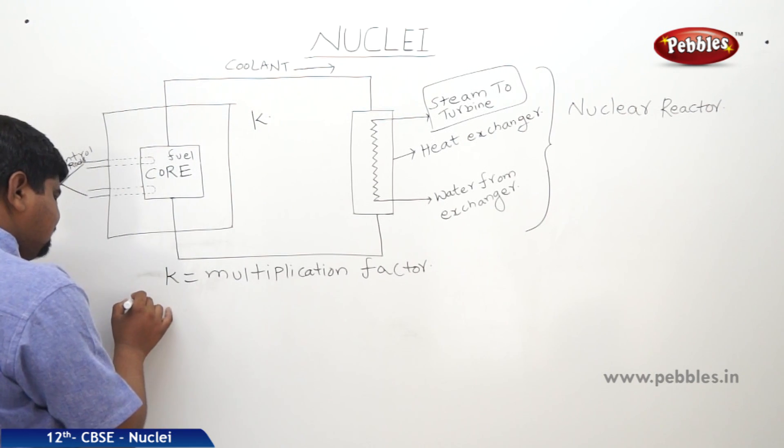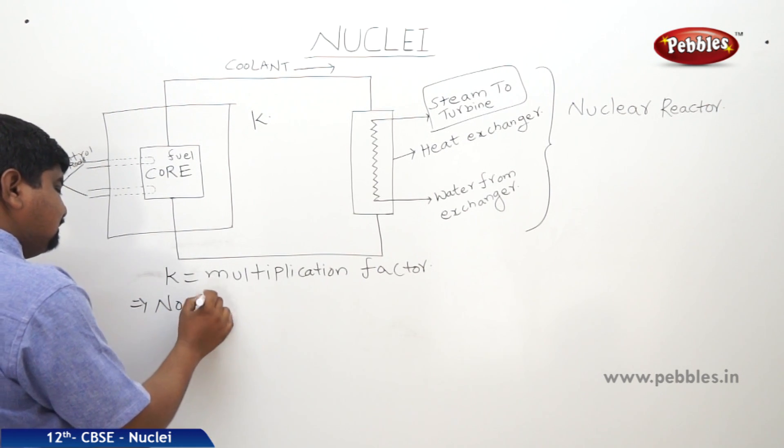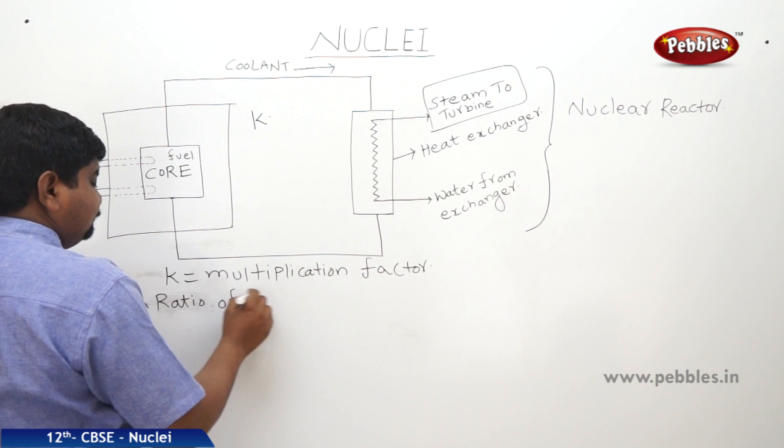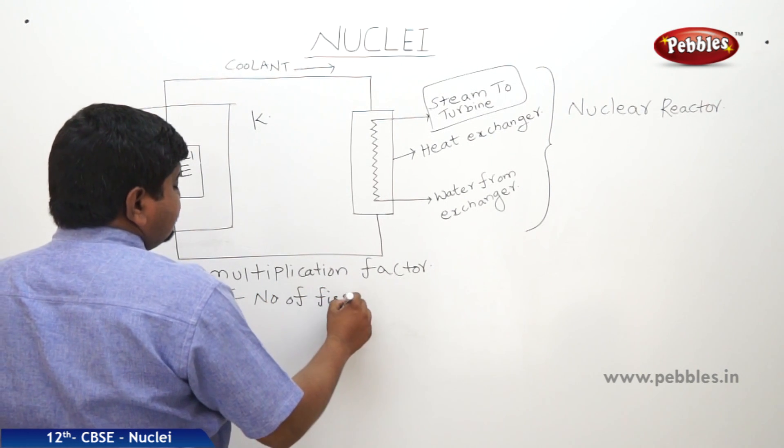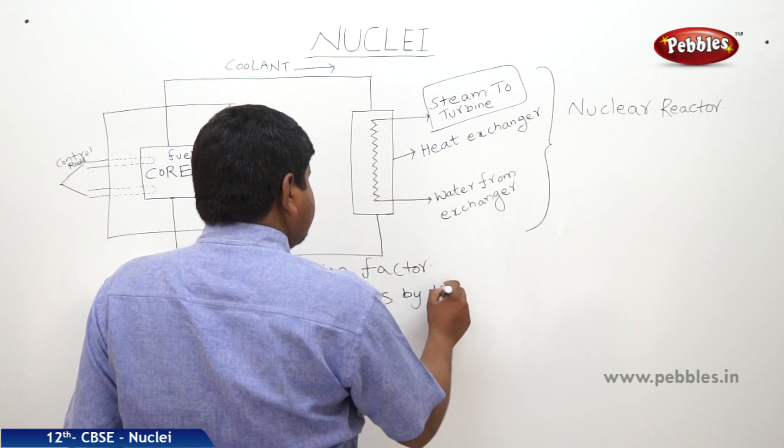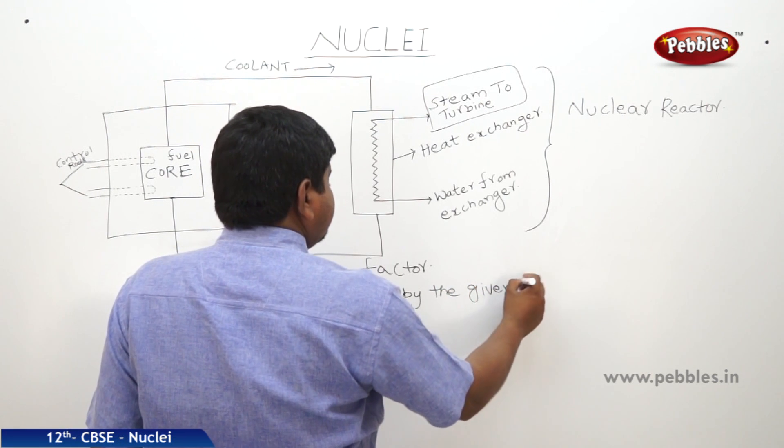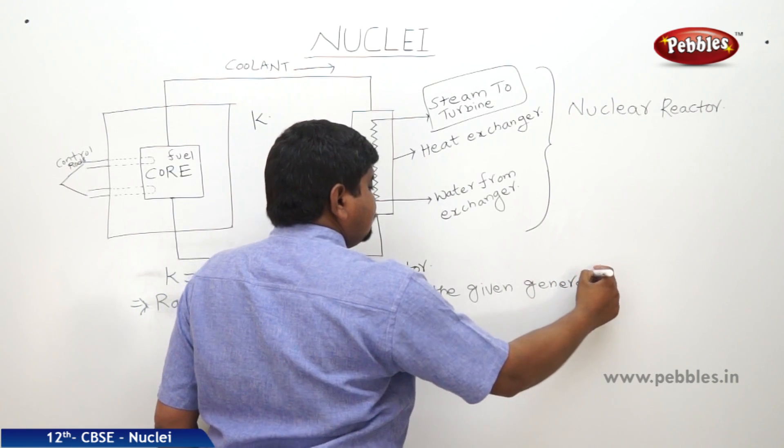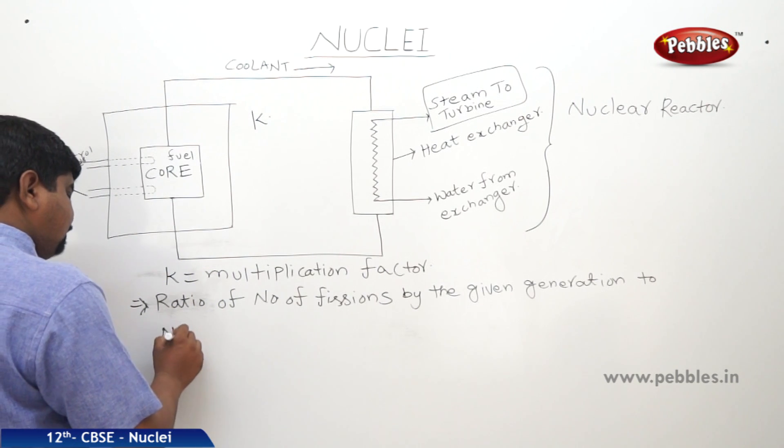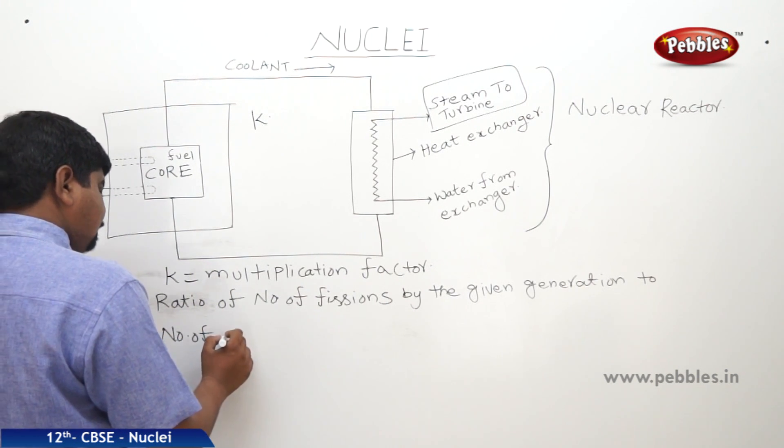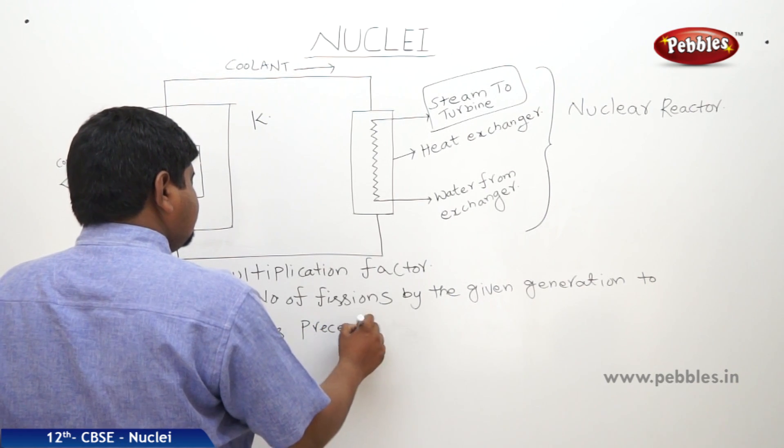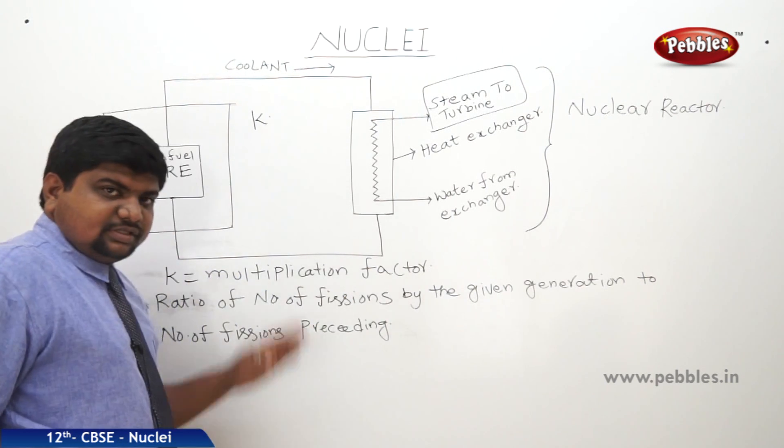It is defined as the ratio of number of fissions by the given generation to the number of fissions preceding. This is called as K.